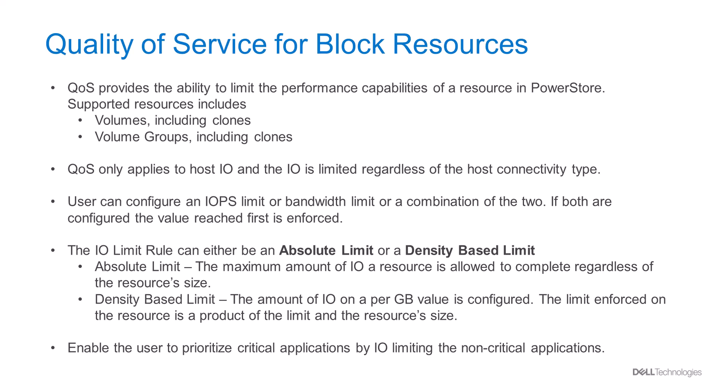Users can also configure the IOPS limit or bandwidth limit, or a combination of the two. If both the IO limit and the bandwidth limit are configured for a resource, the value which is reached first is enforced. Users can also configure two types of IO limit rules: the absolute limit or the density-based limit.